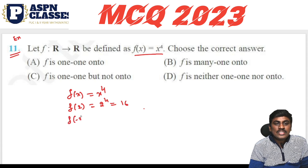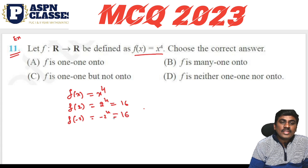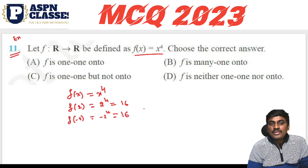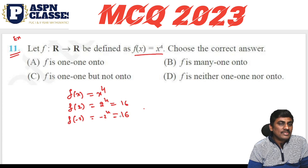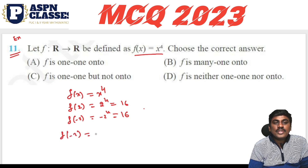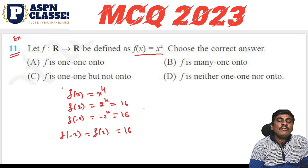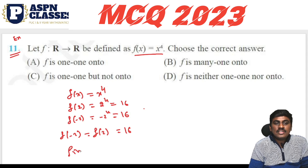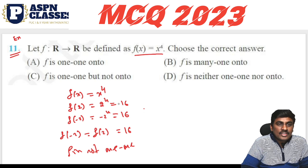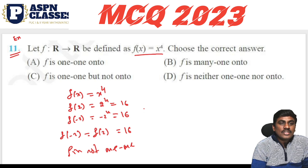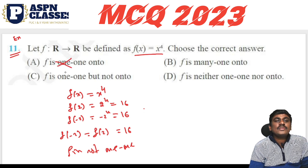We have f(2) = 16 and f(−2) = 16. So there are different elements — f(−2) and f(2) — but the output values are the same. Therefore f is not one-one. The one-one options are wrong. It is many-one.